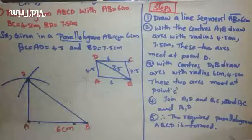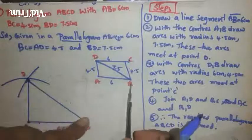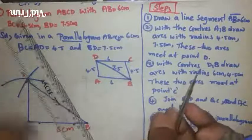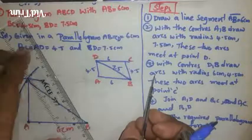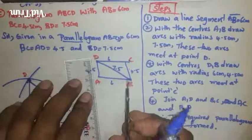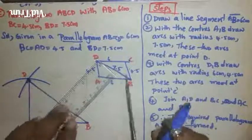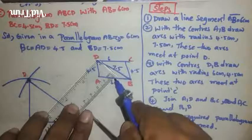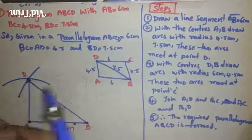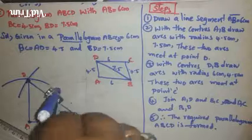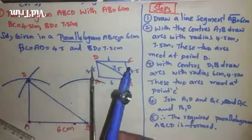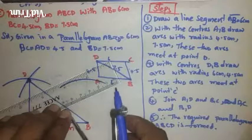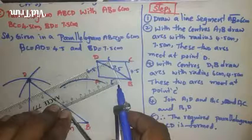Now next, again we should draw arcs. From B to C, 4.5 centimeters arc. From D to C, 6 centimeters. With centers D, we draw arcs. From centers B, we are drawing arcs from B to C, 4.5 centimeters.